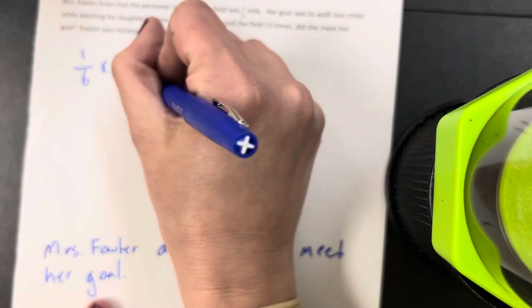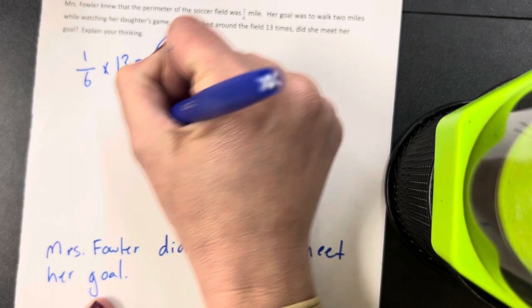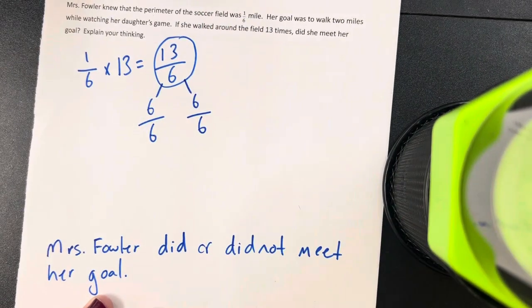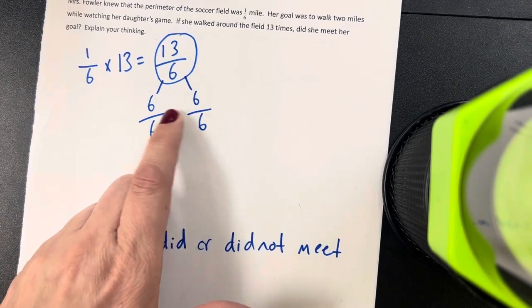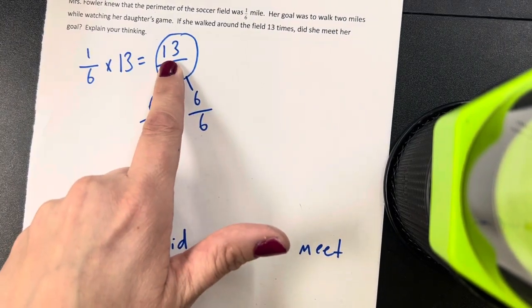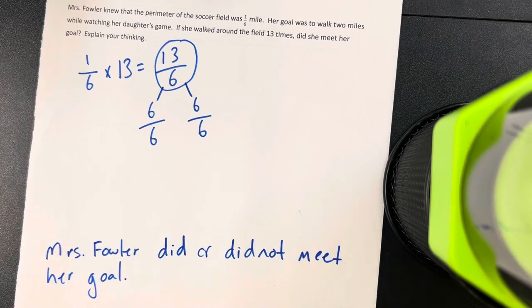So I can pull out six-sixths and six-sixths. Well, six plus six is twelve. So I've pulled out twelve-sixths out of thirteen. What's remaining? One-sixth.